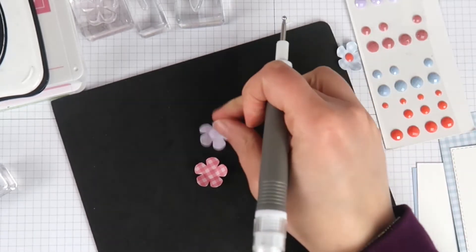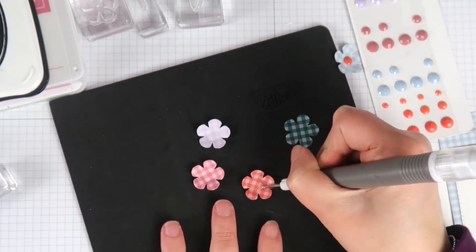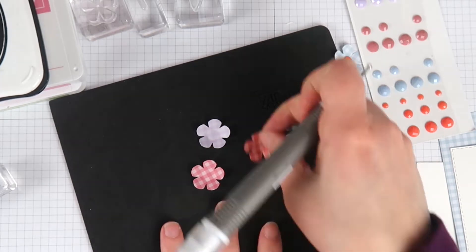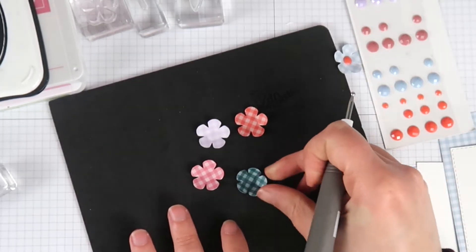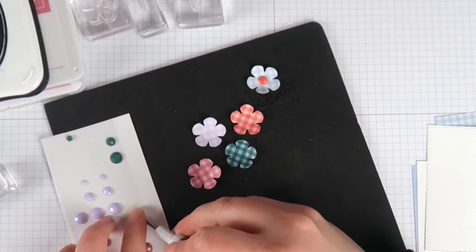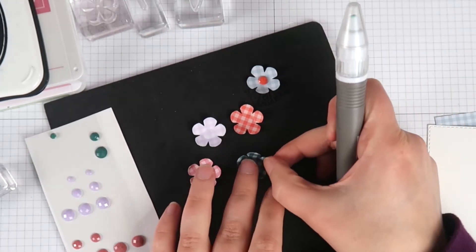I have these flowers on my mat that goes with my Stamparatus. You can use any kind of squishy mat or foam, anything just something that has a little bit of give to it. I'm just doing little circles around the center of my flowers to kind of help them to pop up a little bit.